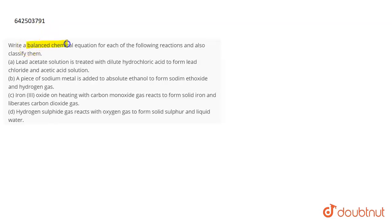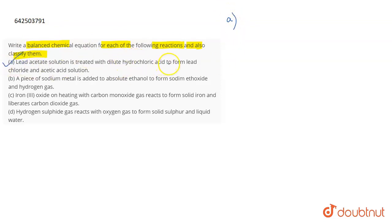The question is: write a balanced chemical equation for each of the following reactions and also classify them. You also have to tell the type of the reaction which is taking place. Talking about the first part: lead acetate solution is treated with dilute hydrochloric acid to form lead chloride and acetic acid solution.